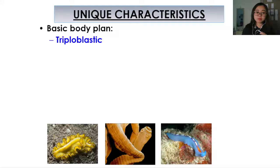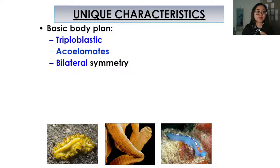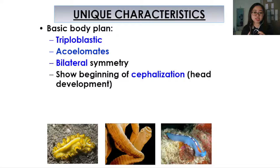Their basic body plan is triploblastic, meaning they have three germ layers: ectoderm, mesoderm, and endoderm. They are also acoelomates. They have bilateral symmetry and they show the beginning of cephalization — the development of a head.